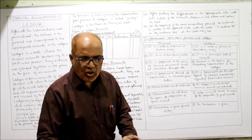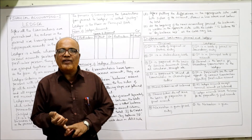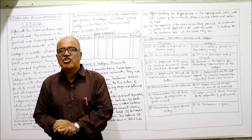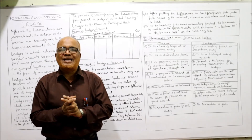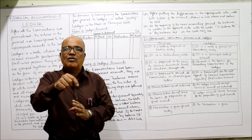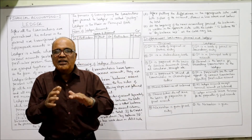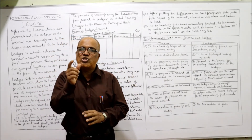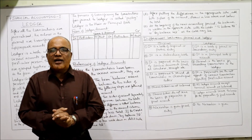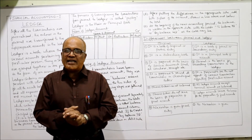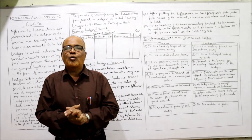So those are the differences between journal and ledger. This is the end of this lecture on the ledger, the format of ledger, balancing of accounts, and differences between journal and ledger. After watching these two videos, you will be in a position to understand how transactions are recorded in journal and how they are posted to ledger accounts.